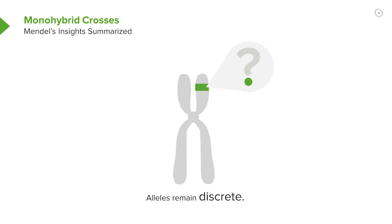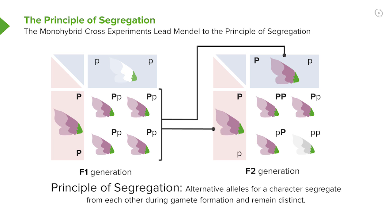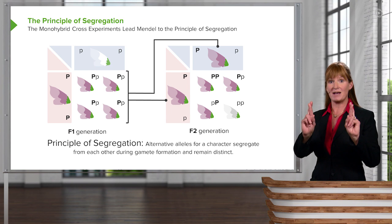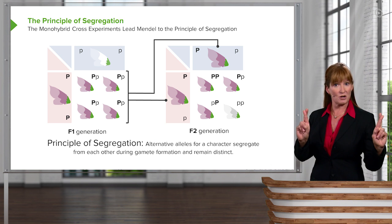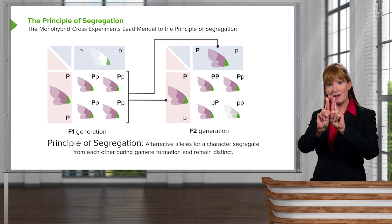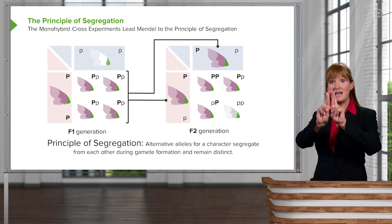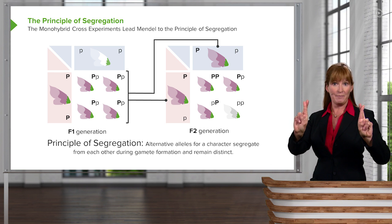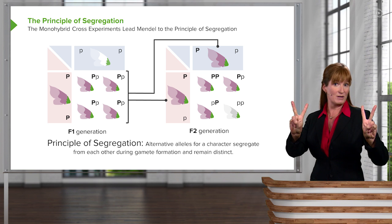Finally, Mendel suggested that these alleles maintain themselves discreetly in the formation of gametes, which is precisely what led him to the principle of segregation. The principle of segregation states that alleles segregate from each other during gamete formation. In terms of chromosomes and meiosis, we have replicated homologous chromosomes that pair up during meiosis I on the metaphase plate and segregate from each other during meiosis I. During meiosis II, the sister chromatids simply separate from each other.